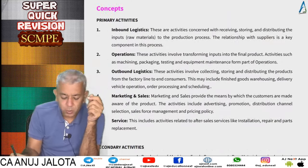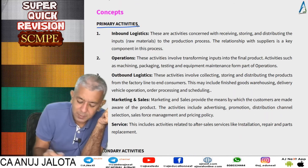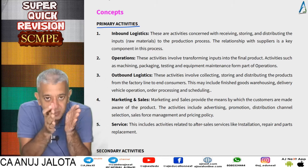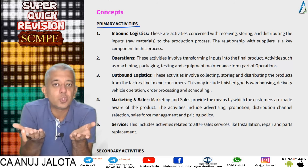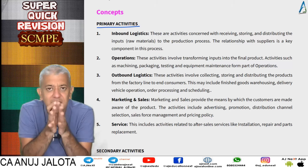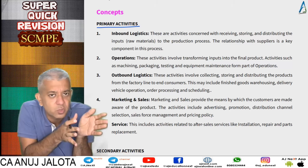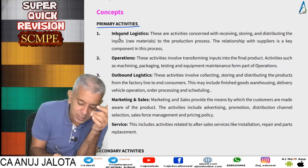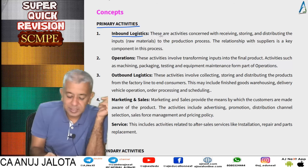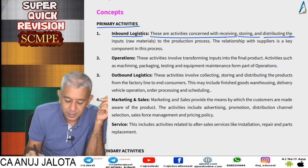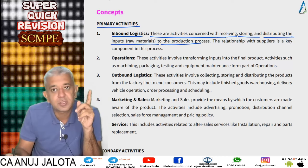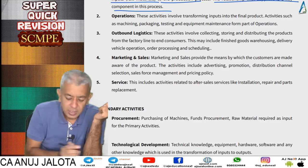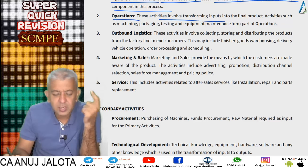Now going a bit deeper into primary activities — the first one is inbound logistics. These are activities concerned with bringing raw materials into your factory and storing them until the time we issue them to the factory. How the material is coming, where it is getting stored, when it is getting issued — all those activities come under inbound logistics. These are activities concerned with receiving, storing, and distributing inputs to the production process. The relationship with suppliers is a key component here.